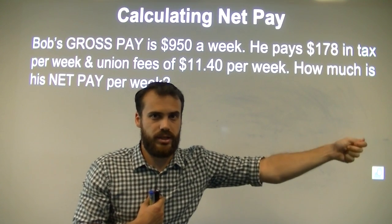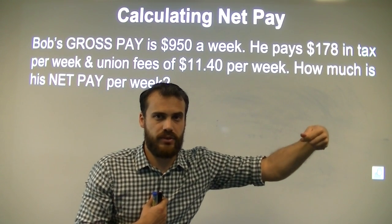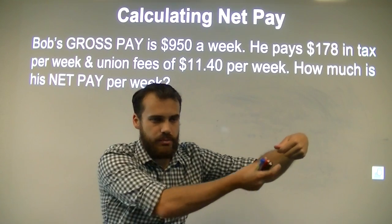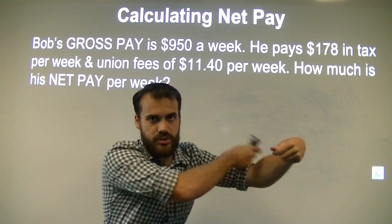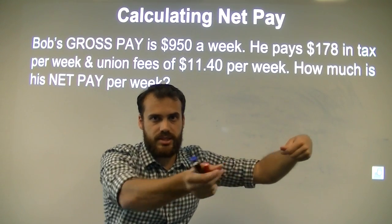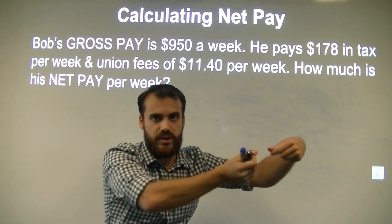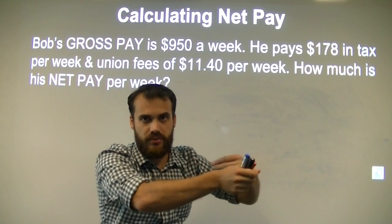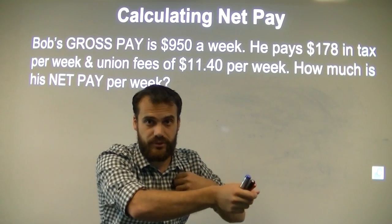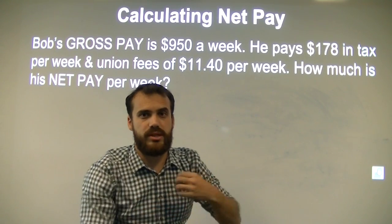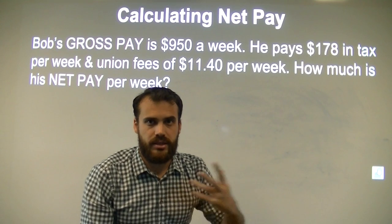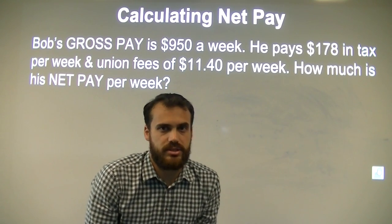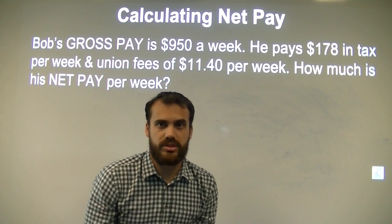So the employer hands over the money — that's gross pay. The money goes to a variety of different places: tax, union fees, whatever. Once it's gone to those other places, whatever is left is your net pay. So let's take a look at a calculation here so you can see how it works in practice.